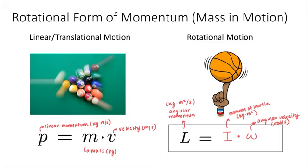And so please note that the units for angular momentum are a bit different than the units for linear momentum because the moment of inertia is measured in kilogram times square meter. The units for angular momentum are kilogram times meter squared per second.